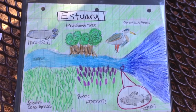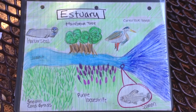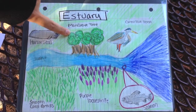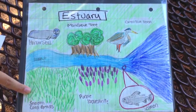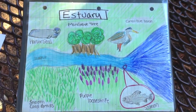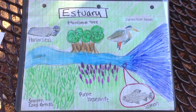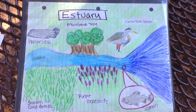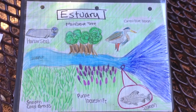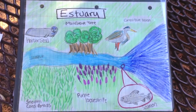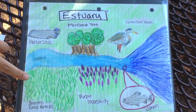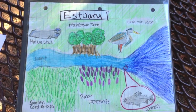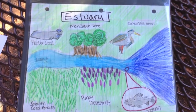Three plant species in an estuary are the mangrove tree, purple loosestrife, and smooth cordgrass. The plants in an estuary must be able to sustain changes in water salinity, and cordgrass has special filters on its roots to remove the salt.